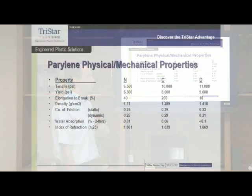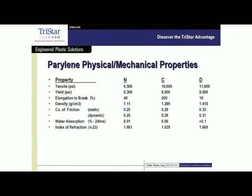The properties of some common perylenes — N, C, and D — are listed here, and each has its own specific property. Most people will choose perylene C. It has a very fast deposition rate and very good material and barrier properties.